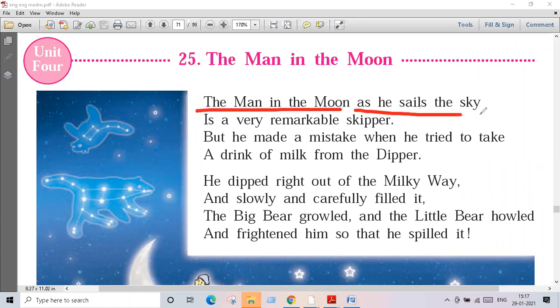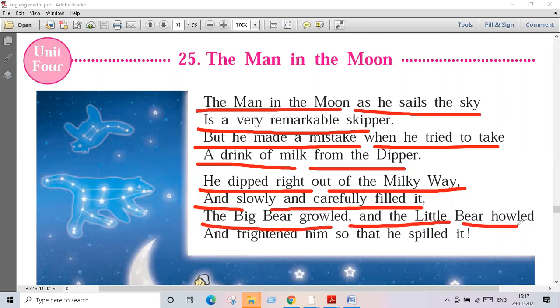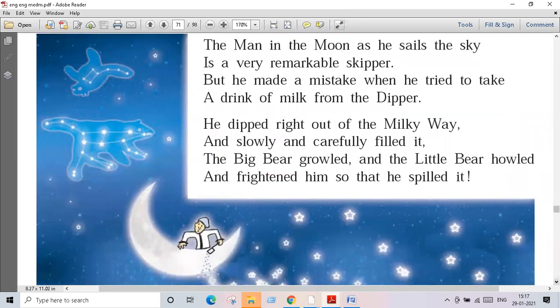The man in the moon, as he sails the sky, is a very remarkable skipper, but he made a mistake when he tried to take a drink of milk from the dipper. What happened? He dipped right out of the Milky Way and slowly and carefully filled it. The big bear growled and the little bear howled and frightened him so that he spilled it.